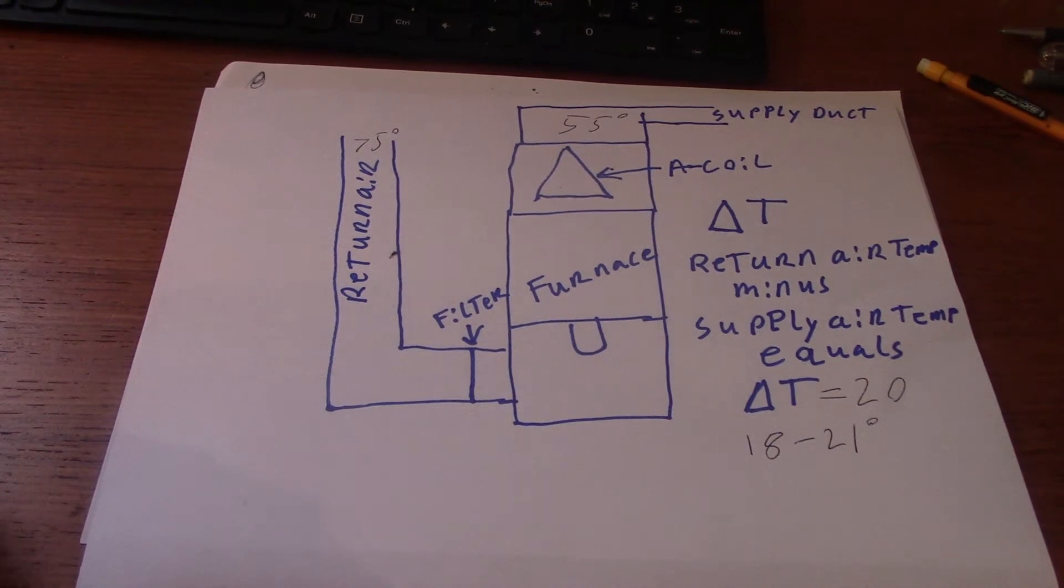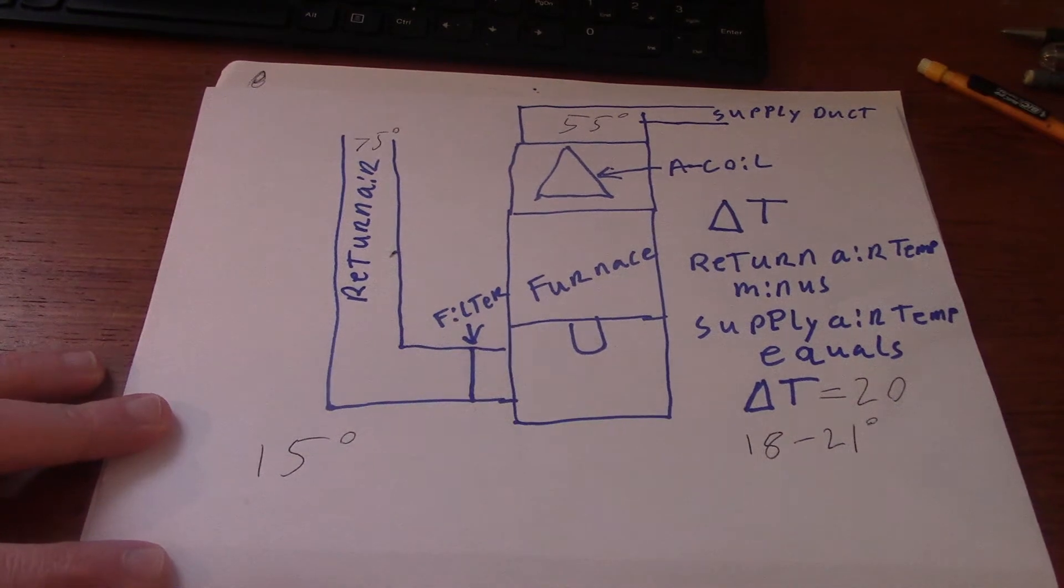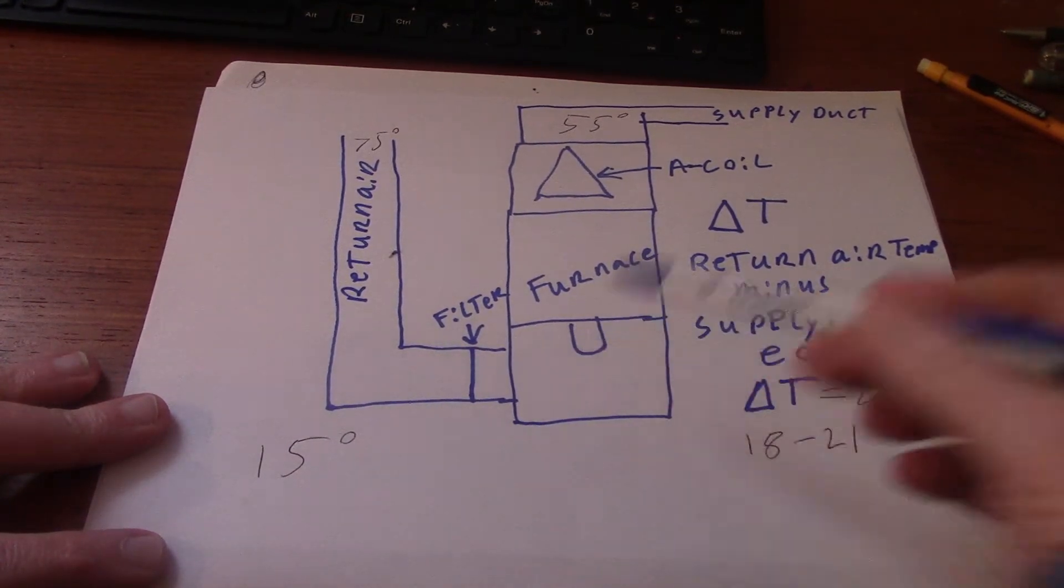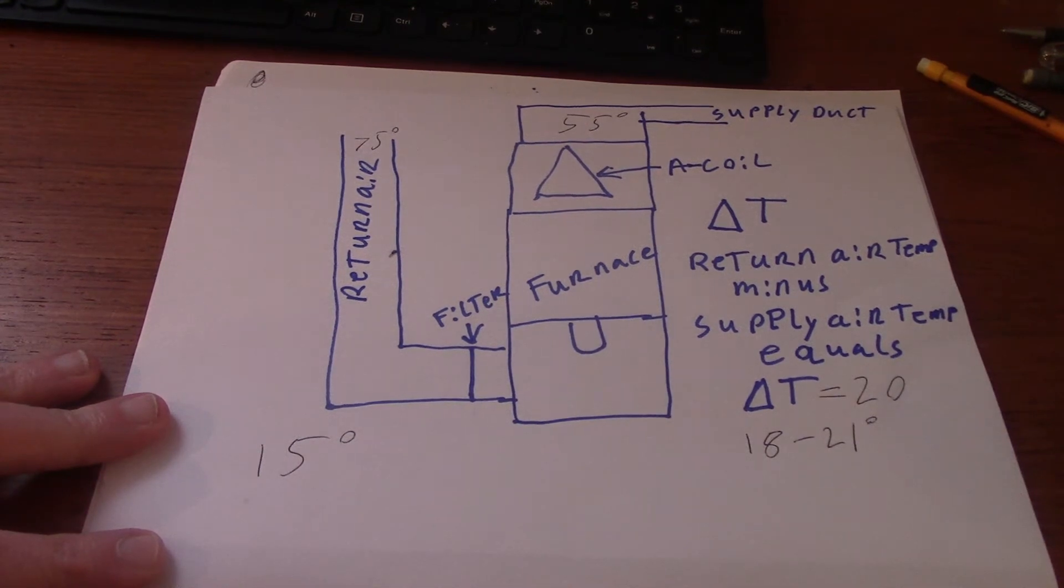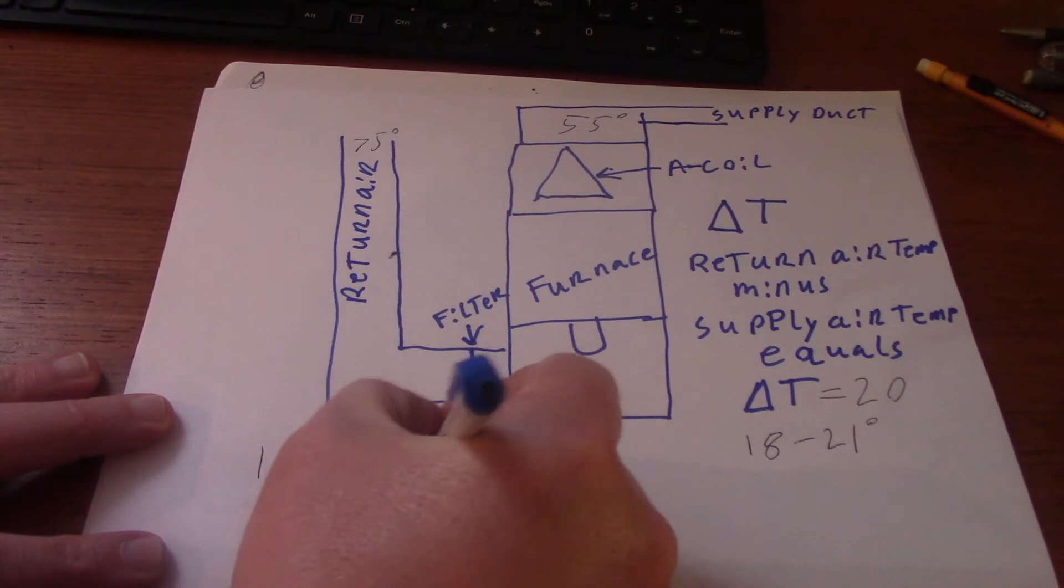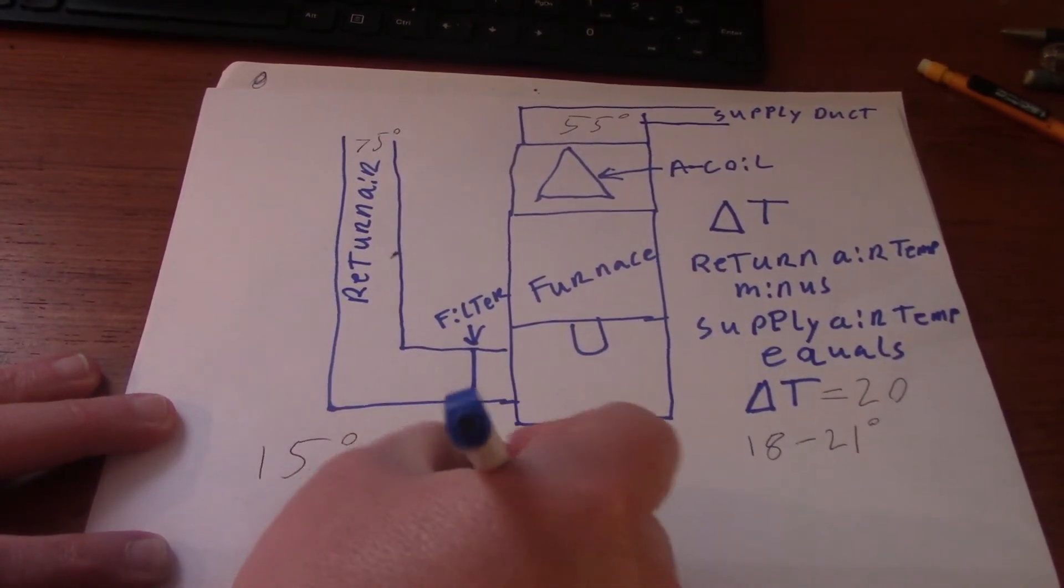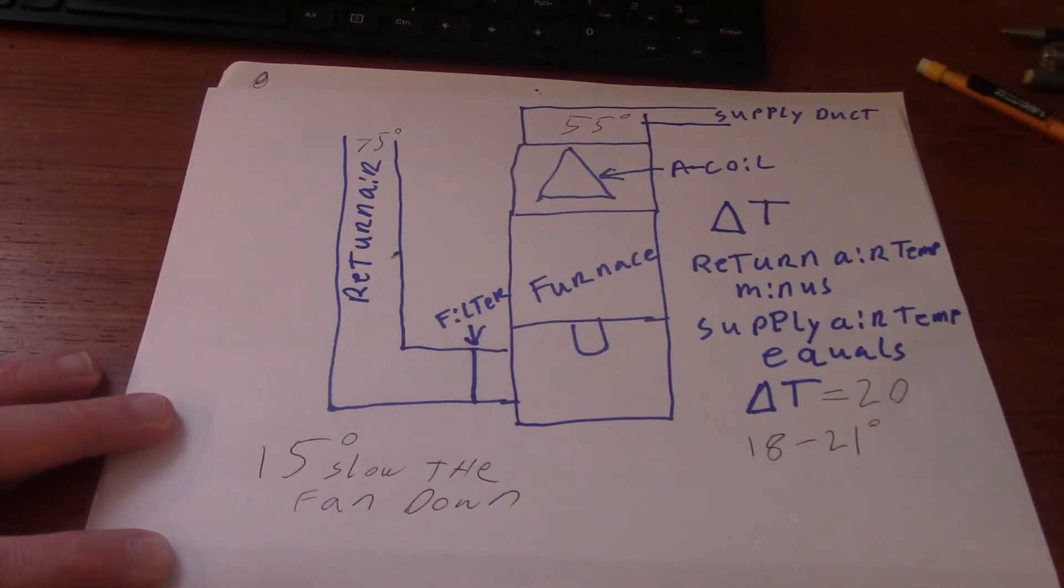If you have Delta T that calculated at, let's say 15 degrees, the blower speed on the furnace here, the fan, it's moving too fast. You're moving too much air. The evaporator here, your A-coil, cannot absorb the heat to function properly. The air is going by too fast. So you'd have to slow the fan down. That's if you're at 15.